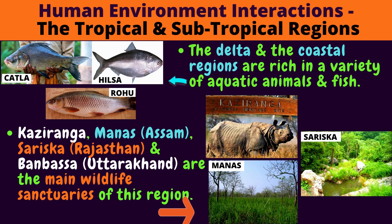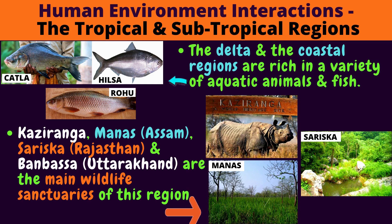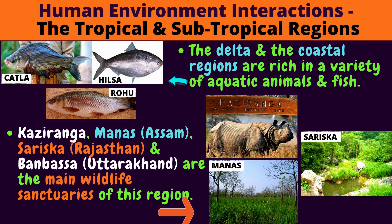Some fish found in this region are Katla, Hilsa and Rohu. Kaziranga and Manas in Assam, Sariska in Rajasthan and Banbasa in Uttarakhand are the main wildlife sanctuaries of this region. Can you see pictures of all these places — Manas wildlife sanctuary, Sariska, Kaziranga?